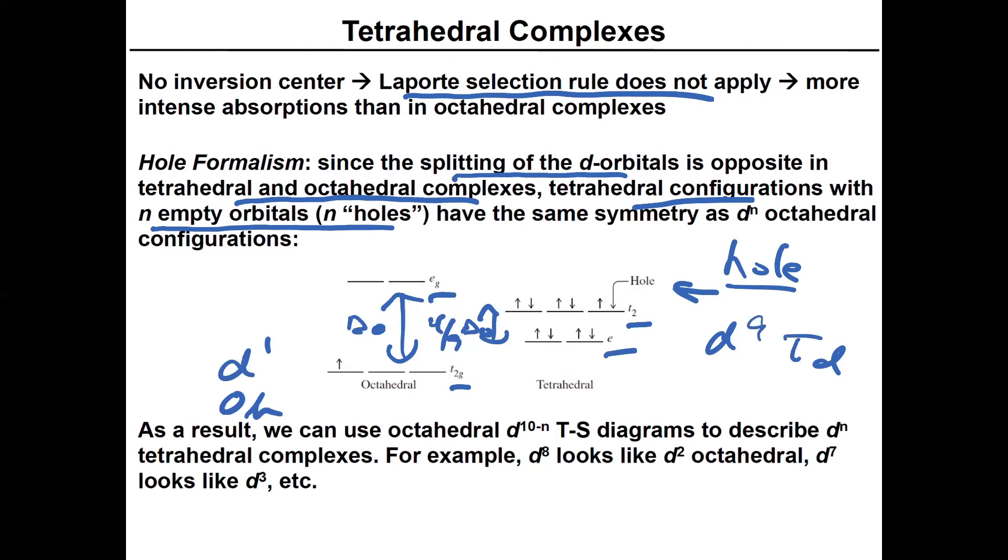And that single hole basically means that it has the same symmetry as the DN octahedral configuration. So basically, D9 in tetrahedral is exactly the same Tanabe-Sugano diagram as D1 in octahedral. And then you can see where this goes. D8 in tetrahedral correlates to D2 in octahedral. And then you can see what's happening. Seven would go to three.